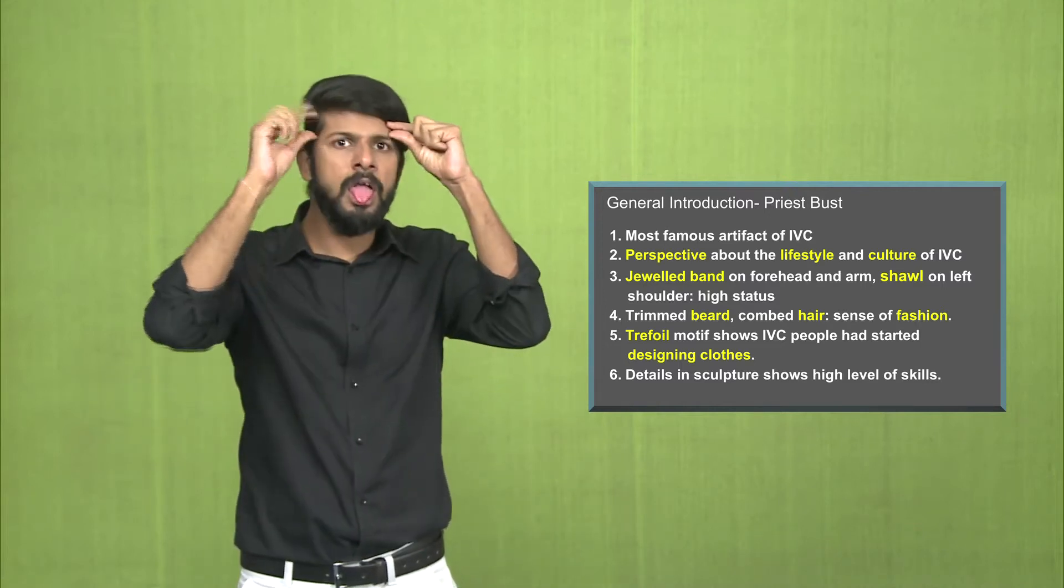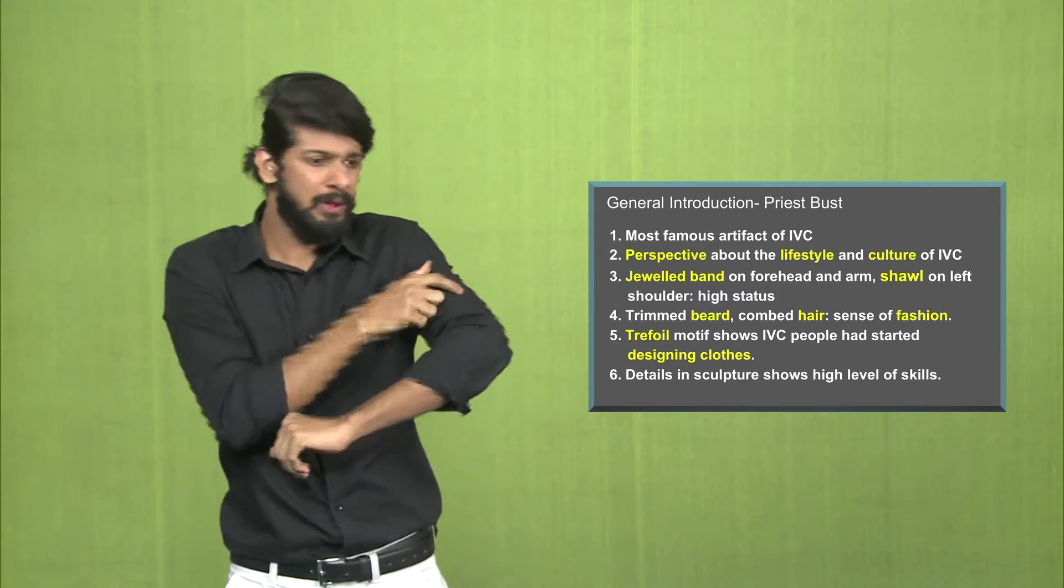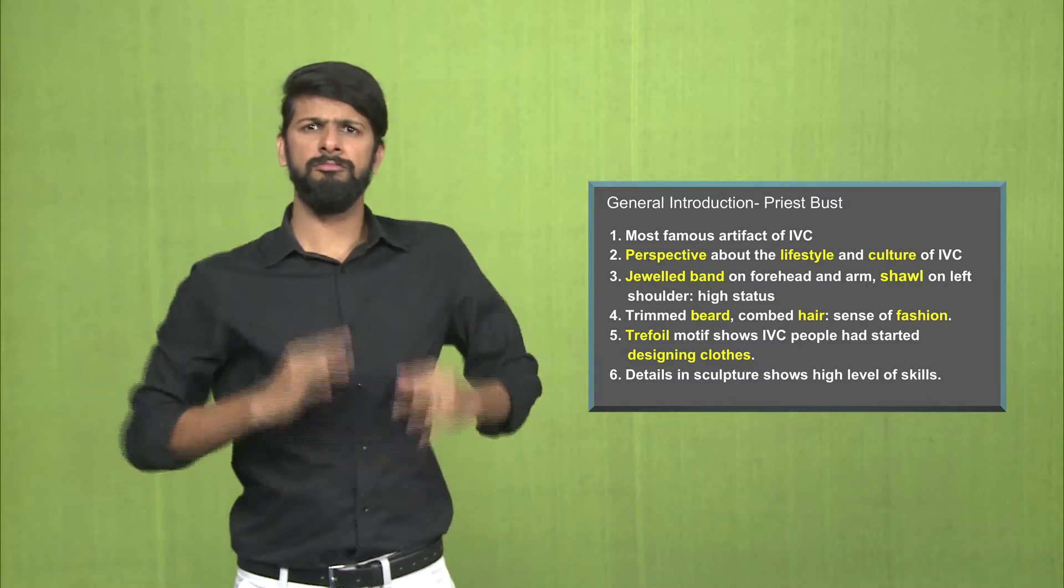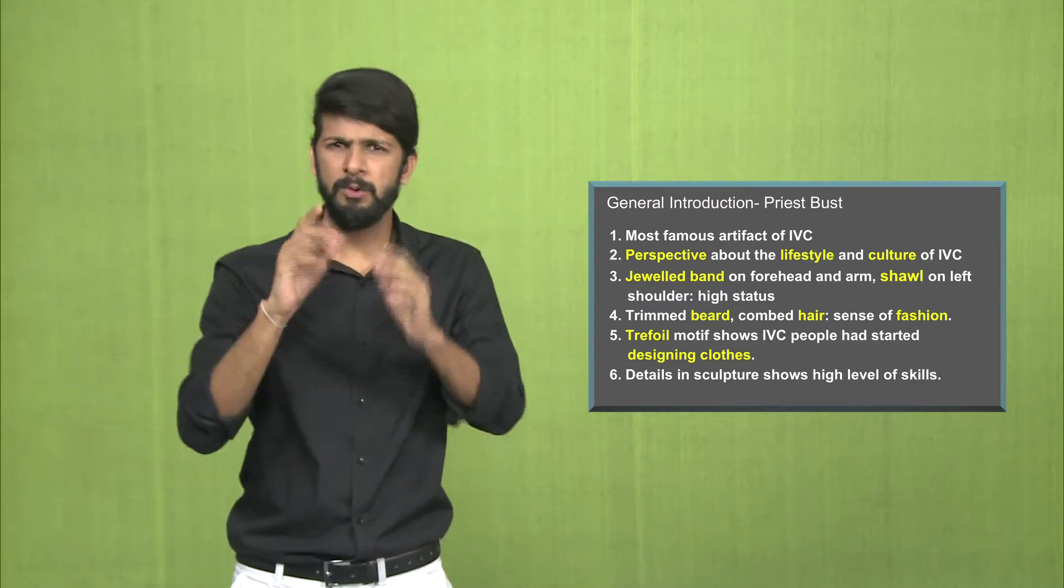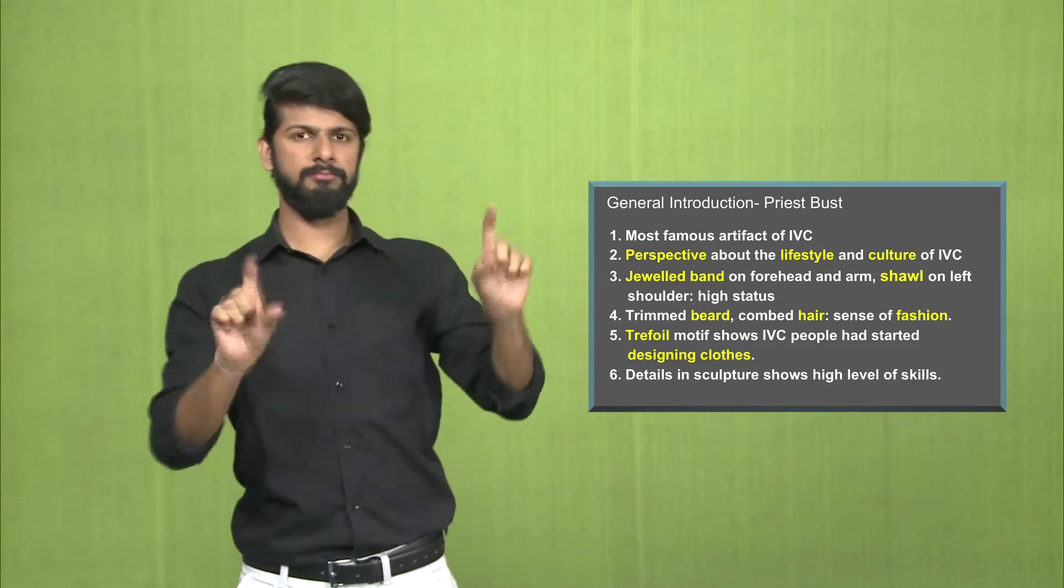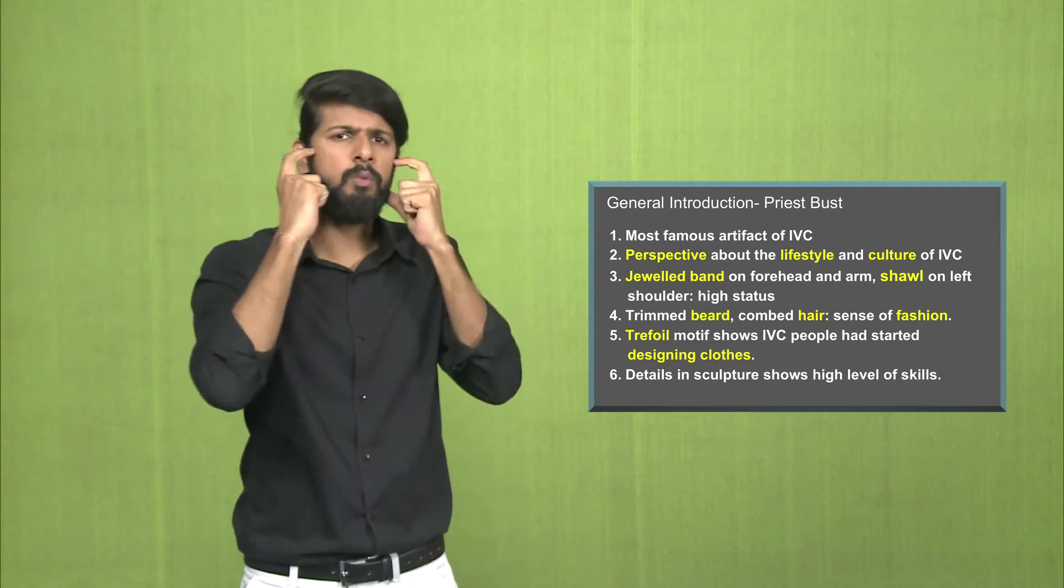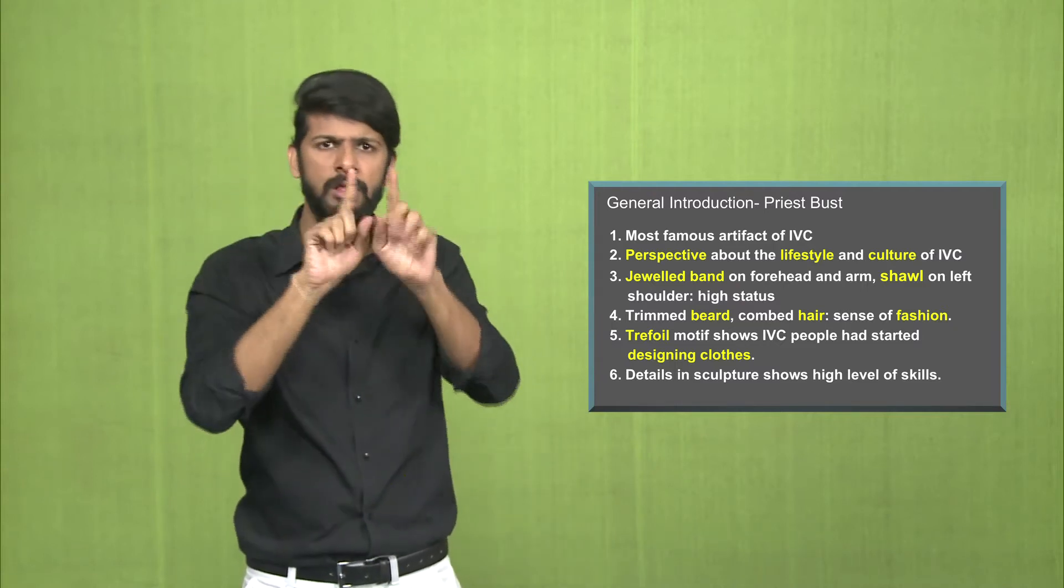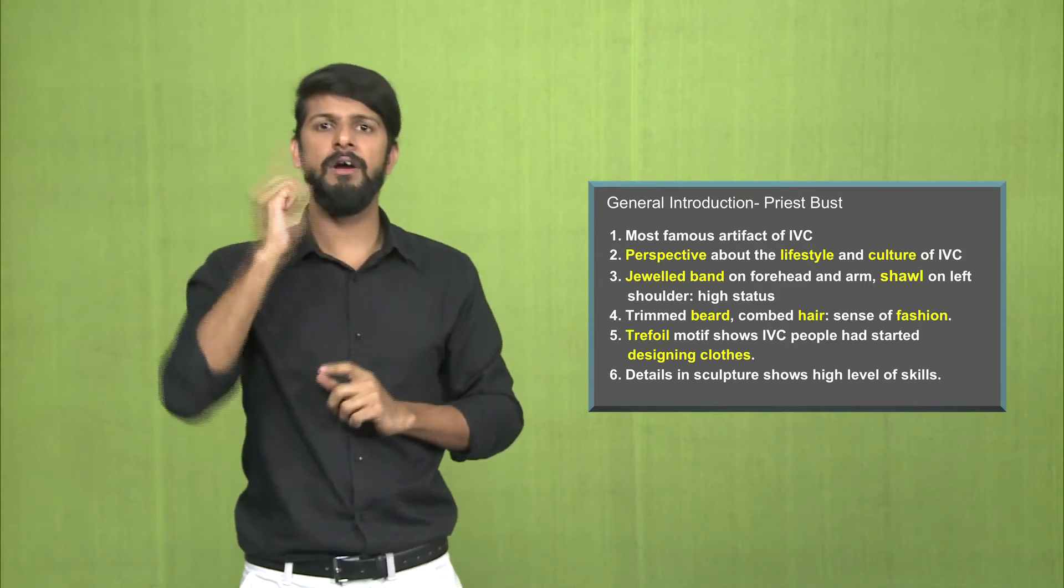The priest bust is beautifully designed. You'll see a jeweled band on the forehead as well as the arm. Both have jewels in it. The priest is also wearing a shawl on his left shoulder, very proportionate. The trimmed beard perfectly neat. The combed hair in the center, precisely done, indicates a sense of fashion among the people of Indus Valley Civilization.